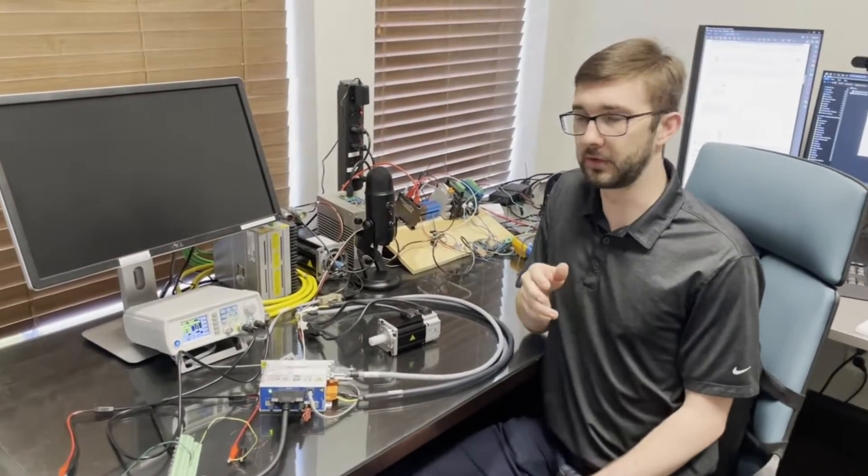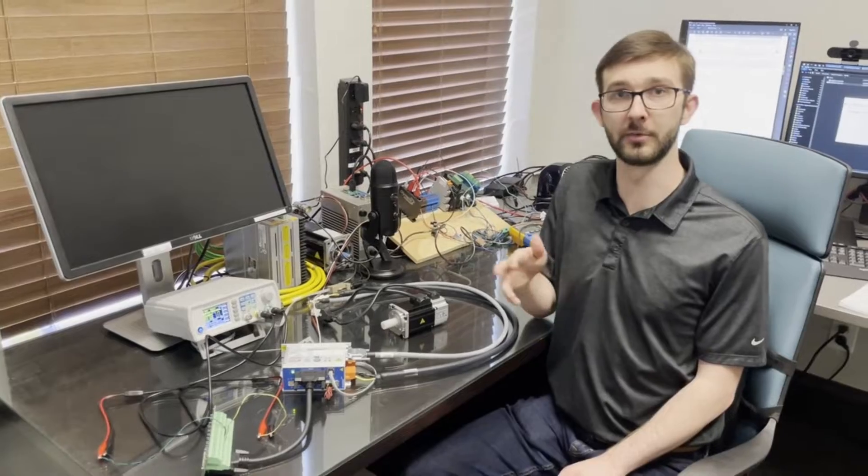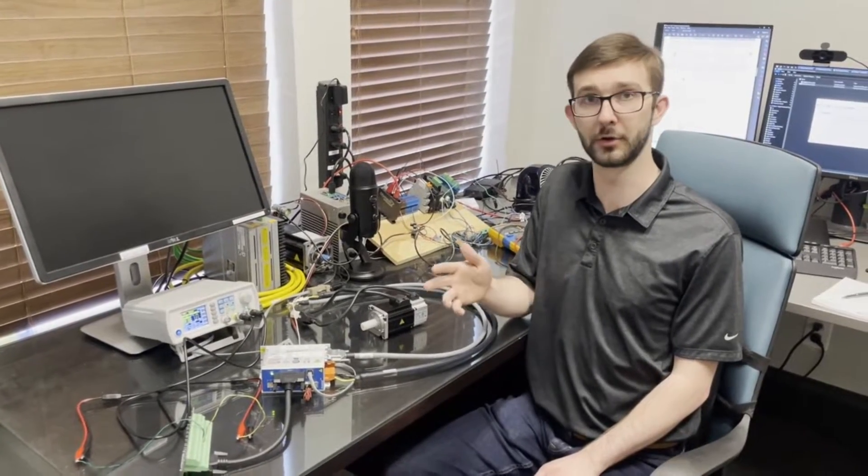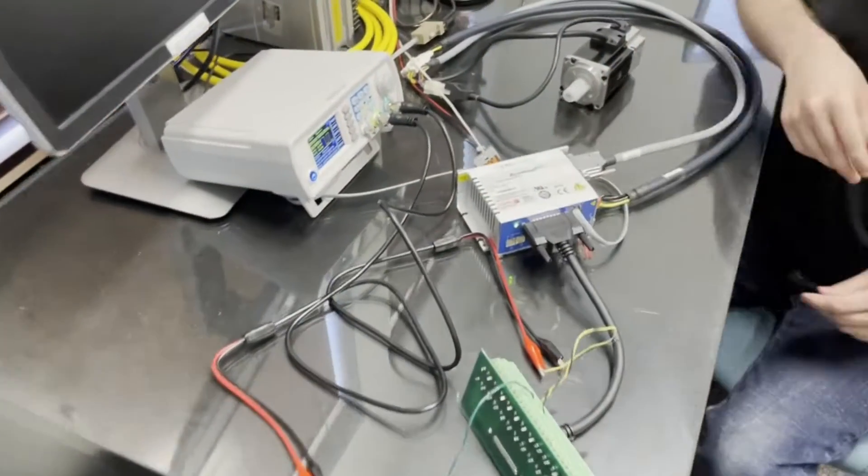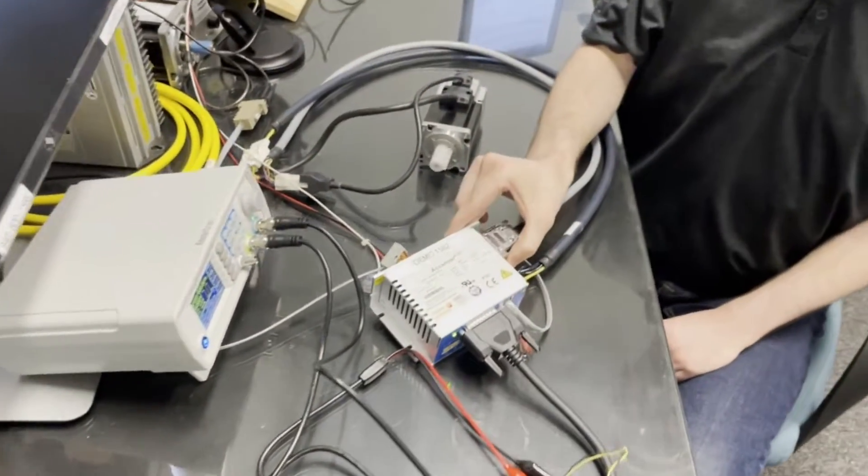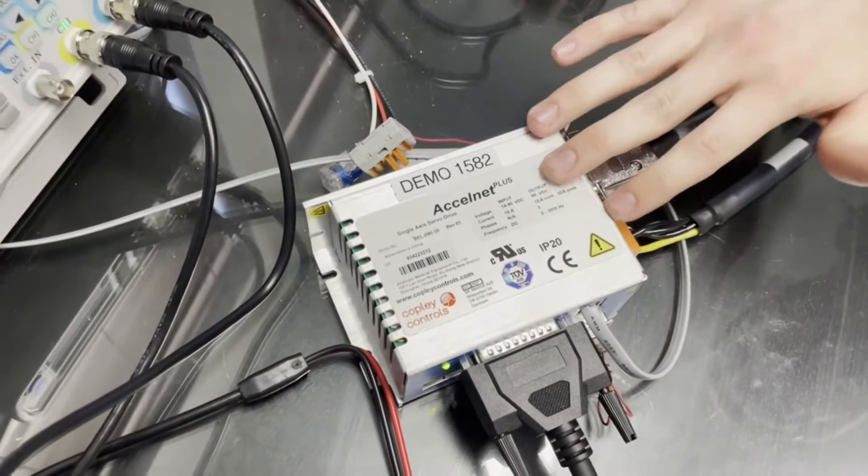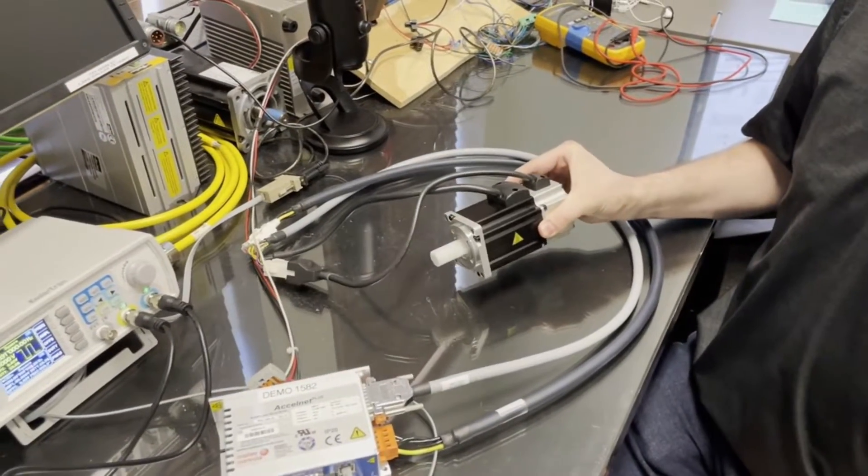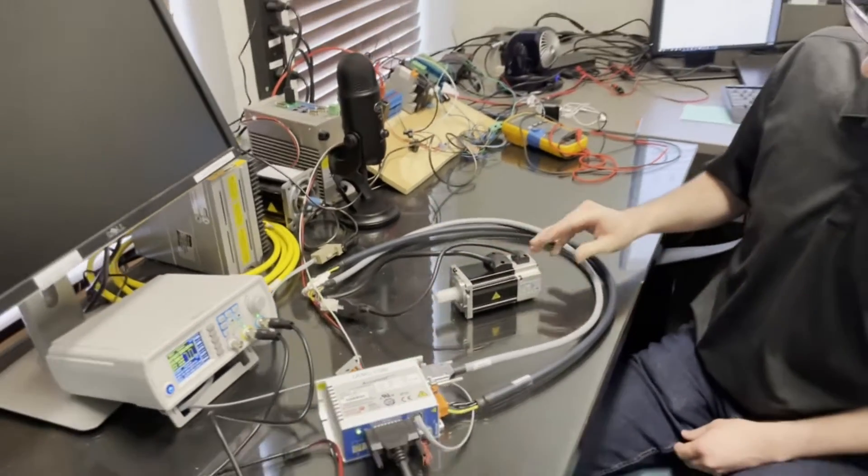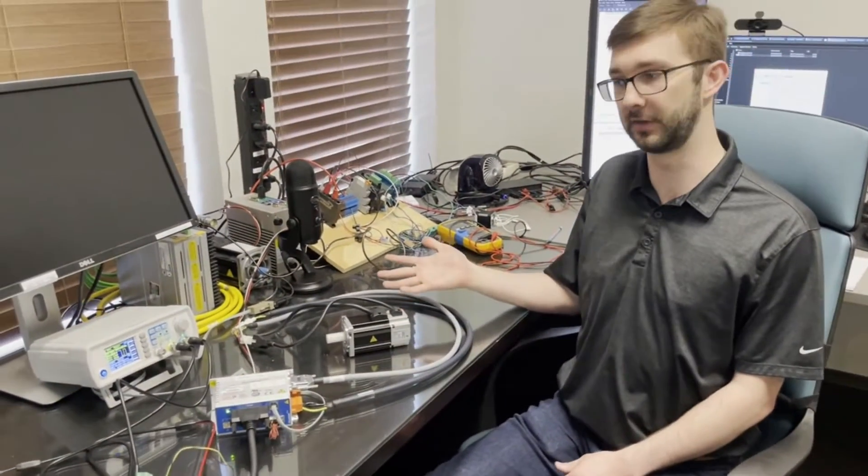So if you don't know, step and direction is an easy way to control a motor just with two signals. I have my two signals right here going to this ExcelNet Plus drive, and that is actually controlling our speed and direction on this motor right here, which is an Olympus Controls Neotech motor.